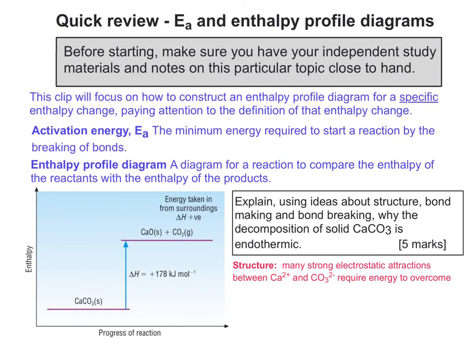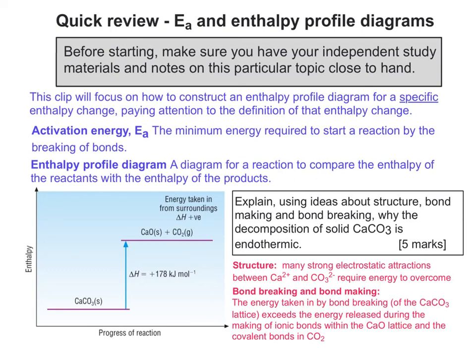The first thing to say is that there are many strong electrostatic attractions between Ca²⁺ and carbonate ions that require energy to overcome. For bond breaking and bond making, the energy taken by bond breaking in the CaCO3 lattice exceeds the energy released during the making of ionic bonds within the calcium oxide lattice and the covalent bonds in CO2. Notice how the language was made more specific — there were five marks on offer, so I was trying to include as much specific language as possible: the lattice, the types of bonds present, not just saying 'bond breaking exceeds bond making.'